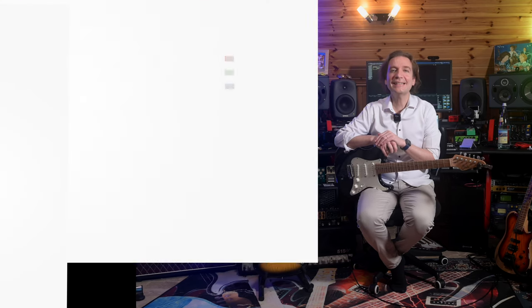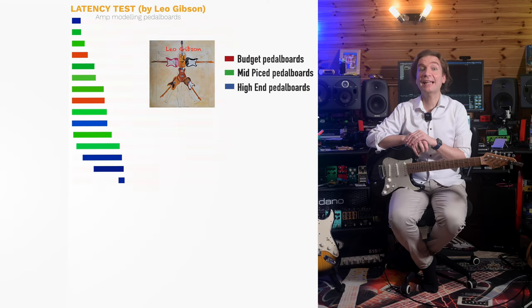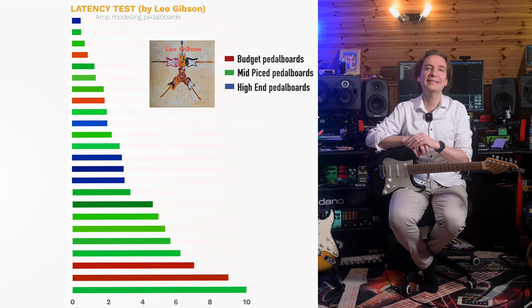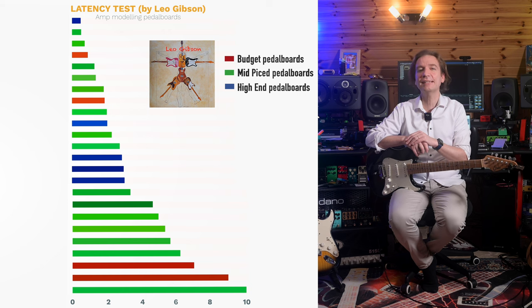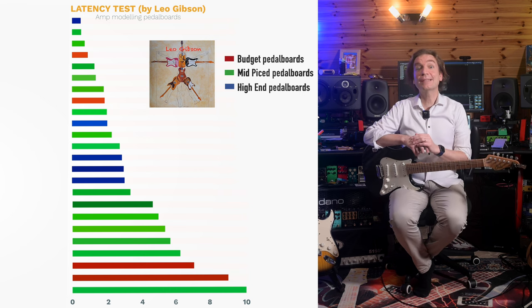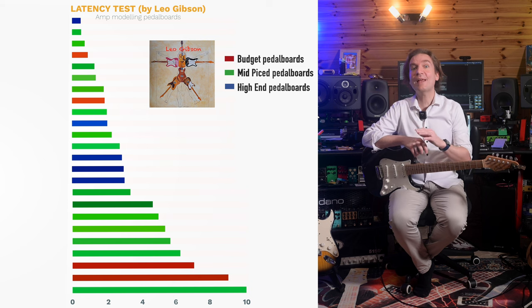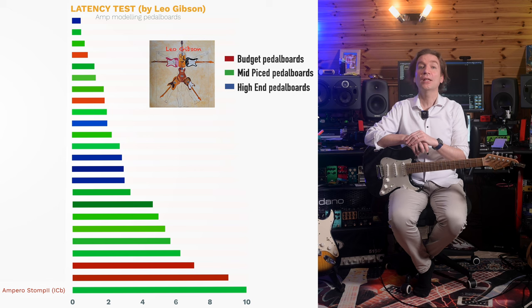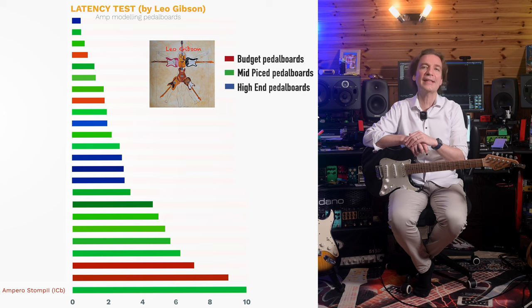This graph represents all the latencies measured for each modeler, and I will now reveal which is which, starting from the modeler with the highest latency down to the quickest response. In last position we have — suspense — the Ampero Stomp 2 with around 10 milliseconds using the Ampero Stomp's internal cab. This is pretty surprising, and there is an interesting insight I will reveal in a few seconds.